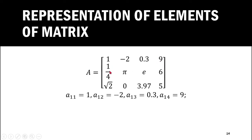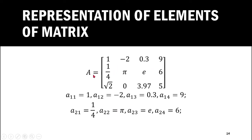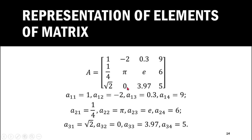Continuing with the third row: √2 belongs to the third row and first column, so A31 = √2. The next element belongs to the third row and second column, so A32 = 0. Similarly, A33 = 3.97 and A34 = 5.